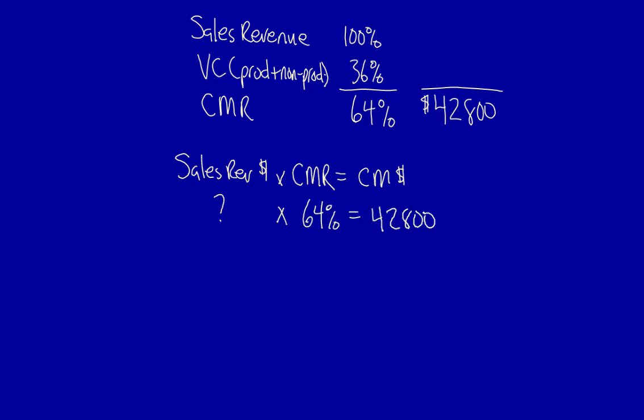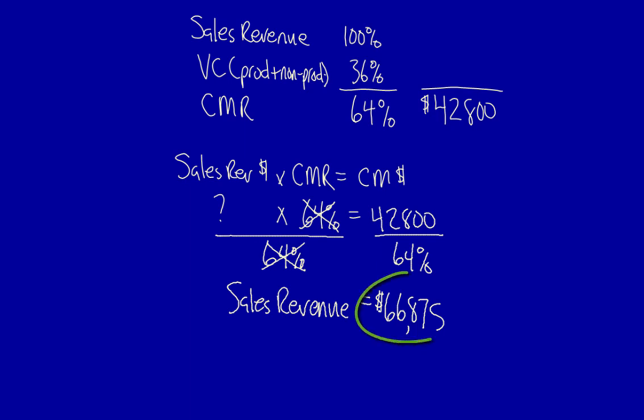If we divide both sides by 64%, we can eliminate the 64% on the left-hand side. That means sales revenue is equal to $42,800 divided by 64%. Sales revenue is therefore equal to $66,875. Let's double-check that. If we multiply this times the Contribution Margin Ratio, we should get $42,800. And we do.